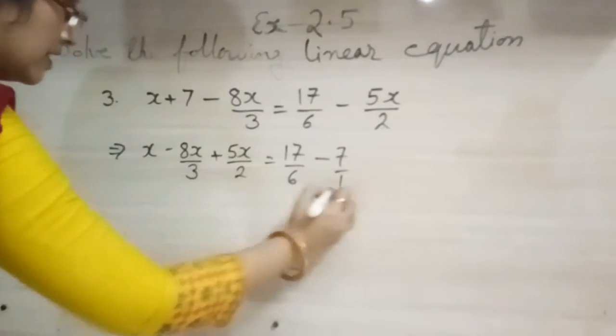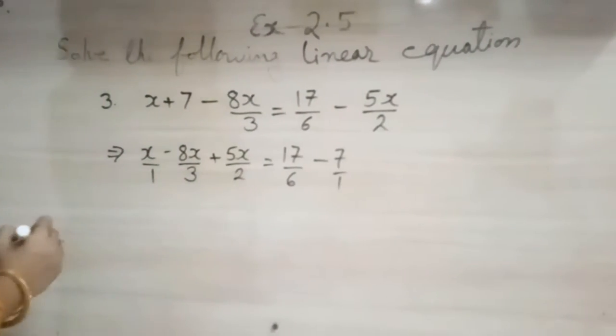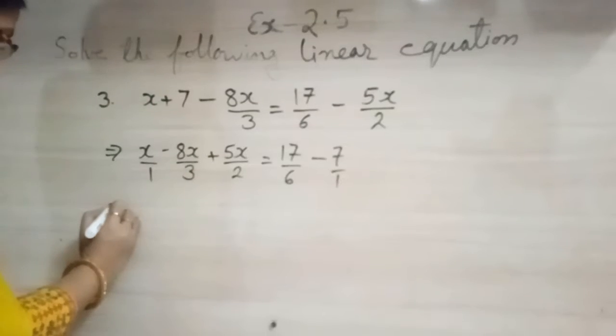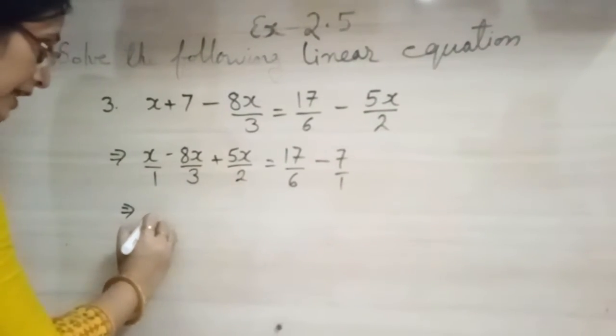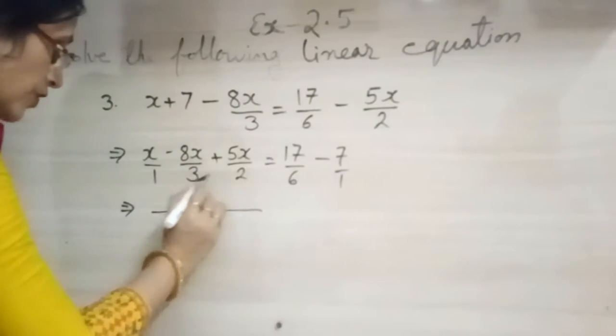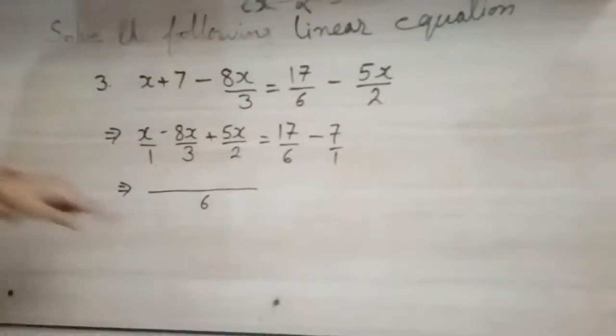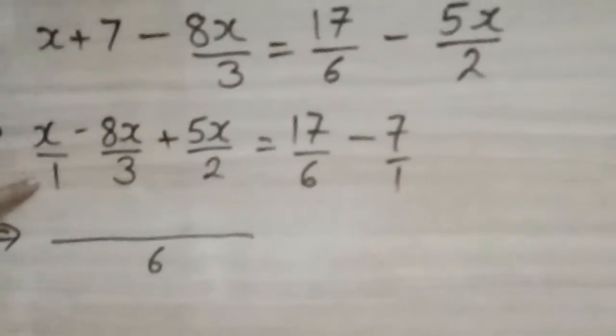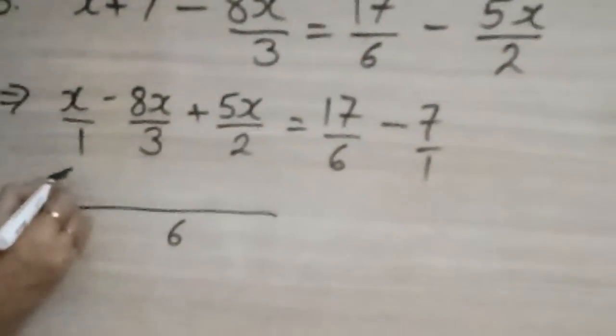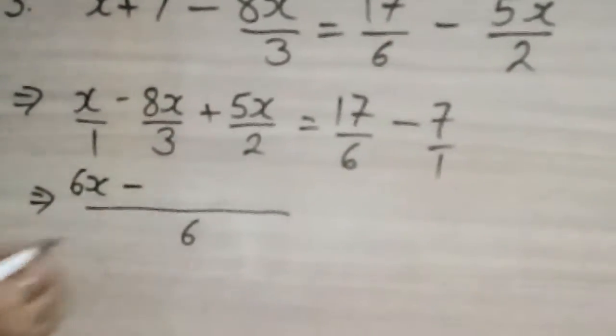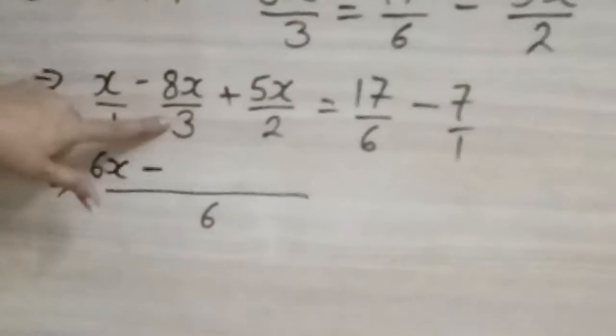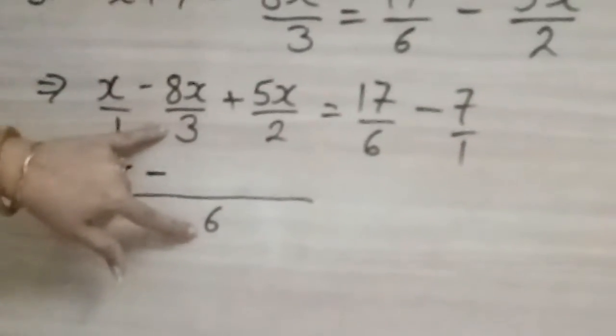Okay, now next step we have to take LCM. So it is upon 1. So what it will become from here, we will take LCM of 1, 3 and 2. So obviously it will be 6. 6 divided by 1 will be 6 only. 6 into x it will become 6x minus 6 into, sorry 6 divided by 3. You will divide.